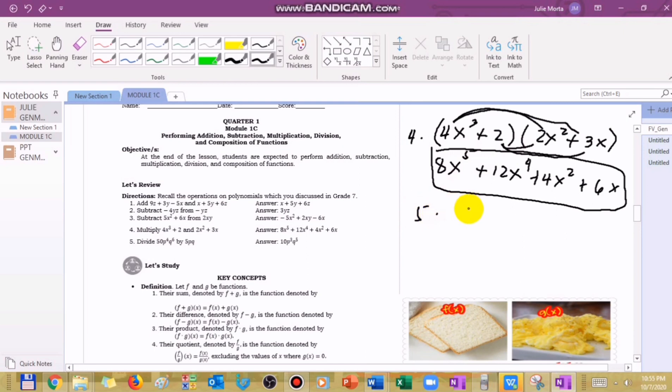For division in number 5, we have 50p raised to 4 q raised to 6 divided by 5pq. Divide 50 divided by 5, so it becomes 10. When the variables are the same, copy and subtract the exponent. If there's no exponent, automatic that is 1. 4 minus 1 is 3, so p cubed. 6 minus 1 is 5, so q raised to 5. This is the final answer.